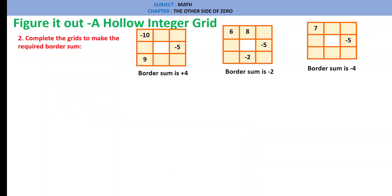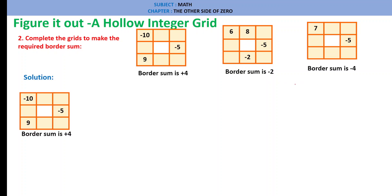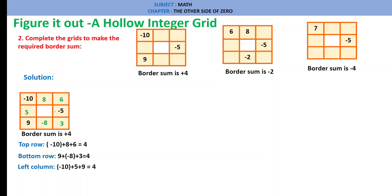Question 2: Complete the grids to make the required border sum. The first subsection has a border sum of plus 4. Solution: minus 10 plus 9 is minus 1; to make it plus 4, we need to add plus 5. Top row: minus 10, plus 8, plus 6 = 4. Bottom row: 9, minus 8, plus 3 = 4. Left column: minus 10, plus 8, plus 9 = 4. Right column: 6, minus 5, plus 3 = plus 4.